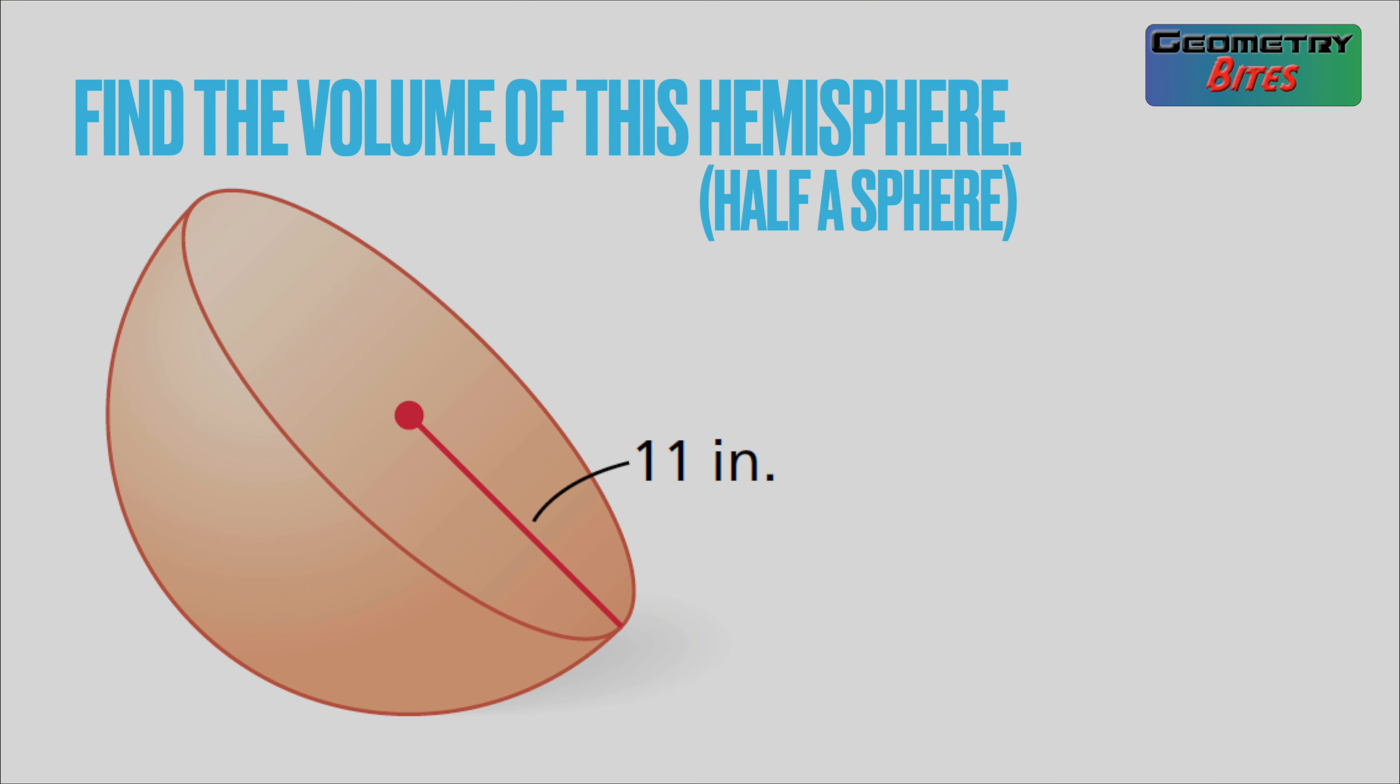Now that we know that, let's find the volume of this hemisphere. Hemisphere, by the way, means half a sphere. So remember our formula is 4/3 π r³. In this case, 11 cubed. I'm not going to lie to you, I do not know what 11 cubed is, so I'm going to go into a calculator. 11 cubed is 1331.